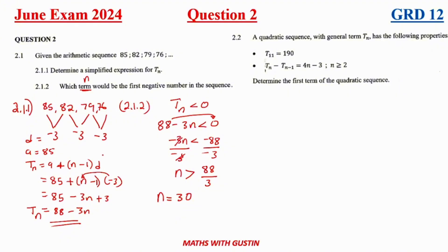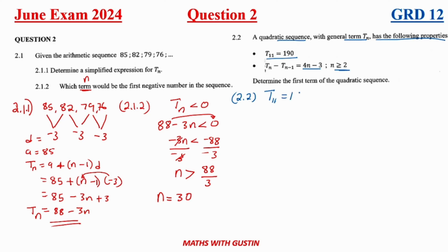Let's move to question 2.2. We are given a quadratic sequence with general term Tn that has the following properties: t11 equals 90, and Tn minus T(n-1) equals a given expression, with n greater than 0.